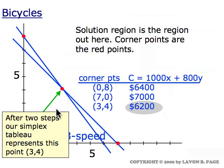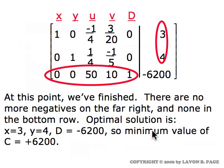In summary, step one of the simplex method carried us to a point not even in the solution region at all. Step two carried us not only to a corner point of the solution region, but to the best corner point in terms of minimizing the cost. So we've finished the problem — there's nothing else to do, we have the optimal solution.